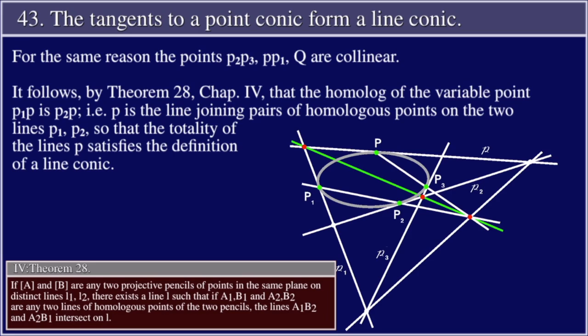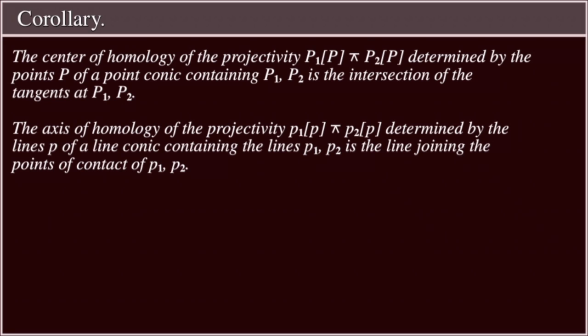It follows, by Theorem 28, Chapter 4, that the homologue of the variable point P₁P is P₂P; i.e., p is the line joining pairs of homologous points on the two lines P₁, P₂, so that the totality of the lines p satisfies the definition of a line conic.